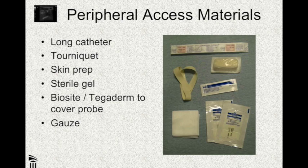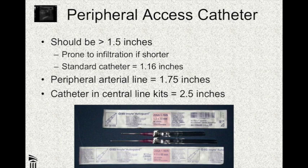You're going to need a long catheter — they do stock these at 48 millimeters, which is 18 millimeters longer than the standard nursing catheter at 30 millimeters. The reason you need the long catheter is because you're going after fairly deep veins and the short catheters are simply not going to reach. You'll also need your tourniquet, skin prep, sterile gel, a Tegaderm, and some gauze.